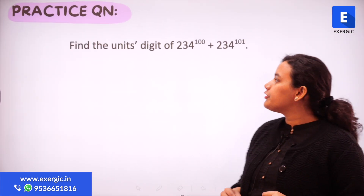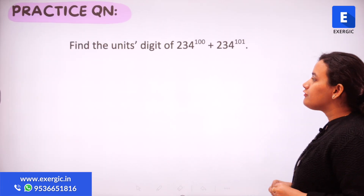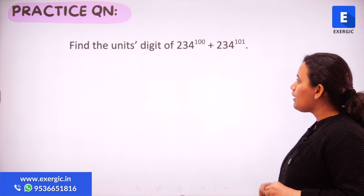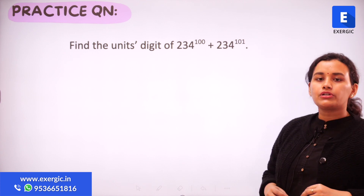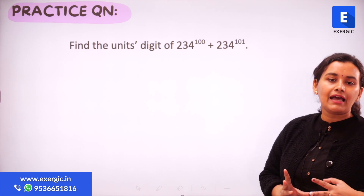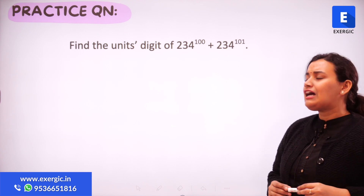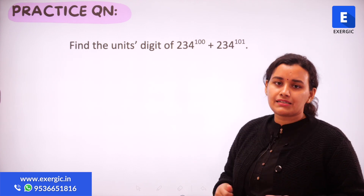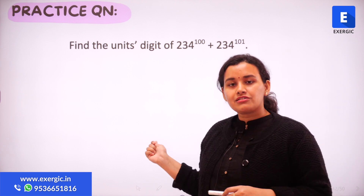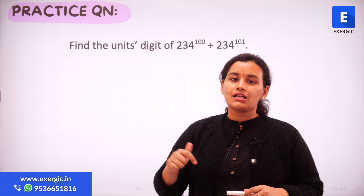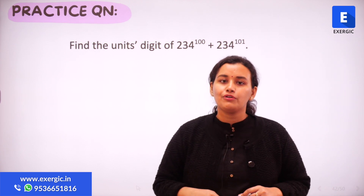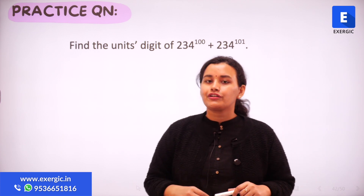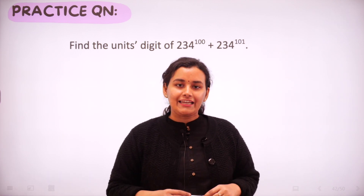Here's a practice question for you: find the units digit of 234 raised to the power 100 plus 234 raised to the power 101. It's a very easy question, and this kind has been asked in GATE before. Leave your answers in the comment section below. I'll see you tomorrow with another question of quantitative aptitude. Take care.